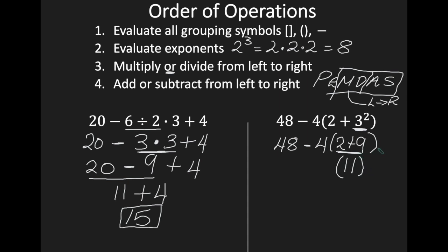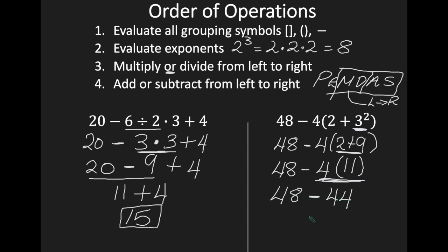Whenever you have parentheses, you're trying to get just one value inside. So I have 48 minus 4, and this 4 is multiplying the 11. We finished with our parentheses; we don't have any exponents. Can we multiply? Yes — 4 times 11 is 44. Our final operation is to subtract 44 from 48, giving me a final value of 4.